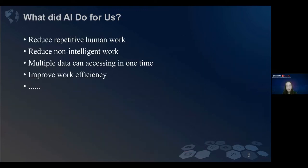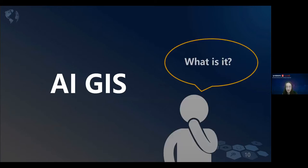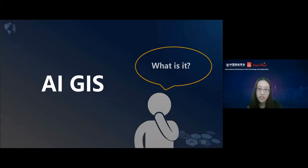It seems like AI can do a lot for us. It can reduce the repetitive human work, can reduce non-intelligence work, and it can access multiple data at one time and improve work efficiency. So can we apply the advantage of AI to the GIS field? If we do so, a new term can start called AI GIS, as the combination of AI with GIS, and create a lot of opportunities that weren't possible before.